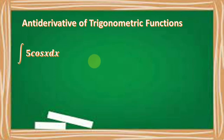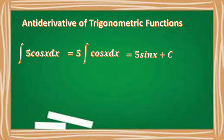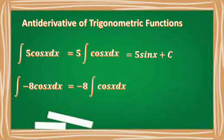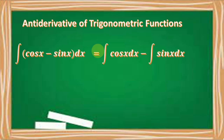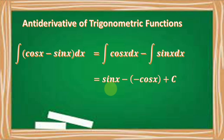The integral of 5 cosine x dx equals 5 times the integral of cosine x dx, which is equal to 5 sine x plus C. The integral of negative 8 cosine x dx equals negative 8 times the integral of cosine x dx, which is equal to negative 8 sine x plus C. For the integral of the quantity cosine x minus sine x dx, this equals the integral of cosine x dx minus the integral of sine x dx, which is equal to sine x minus negative cosine x plus C, which simplifies to sine x plus cosine x plus C.